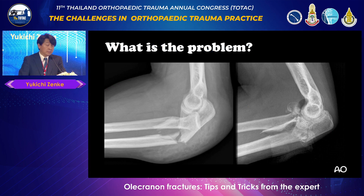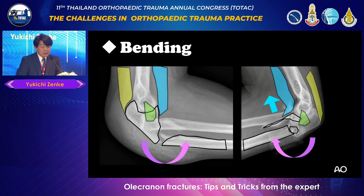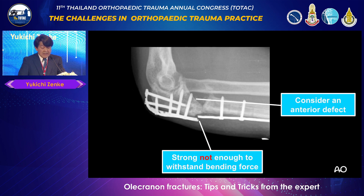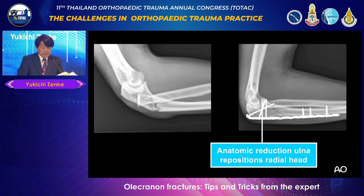Looking at a case example: this is a bending-type fracture, categorized as such because the arm bends with traction from the triceps tendon and biceps tendon. The fixation must be strong enough to withstand the bending force. A plate that is not strong enough may not be adequate. Consider anterior bone defect, which may require bone packing or additional screws. Bending force is very strong, so anatomical reduction, radial head restoration, and arm positioning must be carefully addressed.